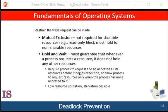To ensure that the hold and wait condition never occurs in the system, we must guarantee that whenever a process requests a resource, it does not hold any other resources. One protocol we can use requires that each process requests and be allocated all its resources before it begins execution. This is not practical for most applications due to the dynamic nature of requesting resources. A process may request some resources and use them, but before it requests any additional resources, it must first release all the resources that it is currently allocated.